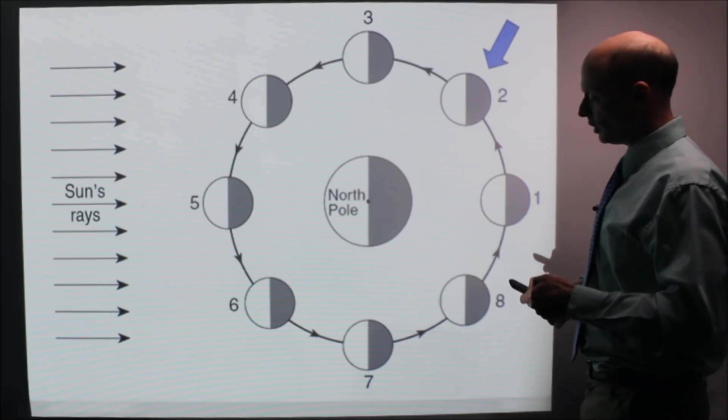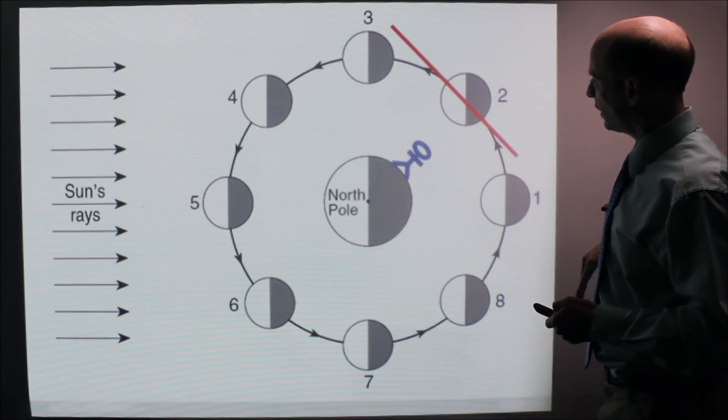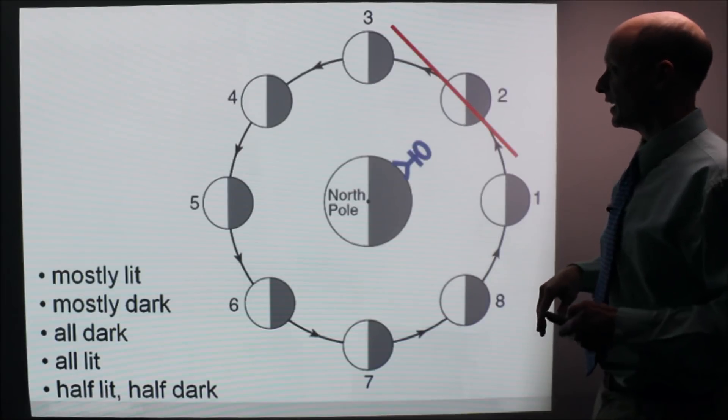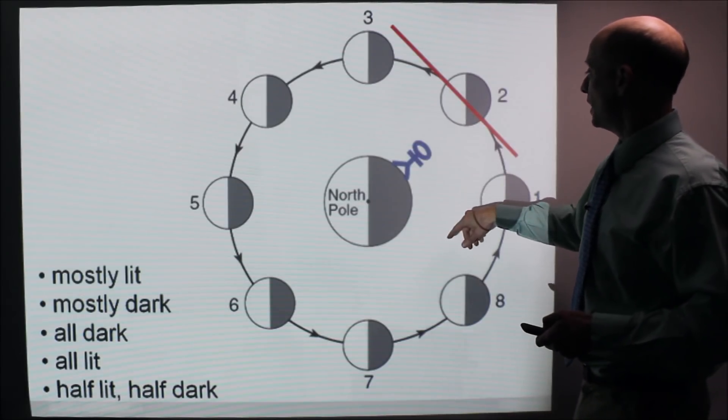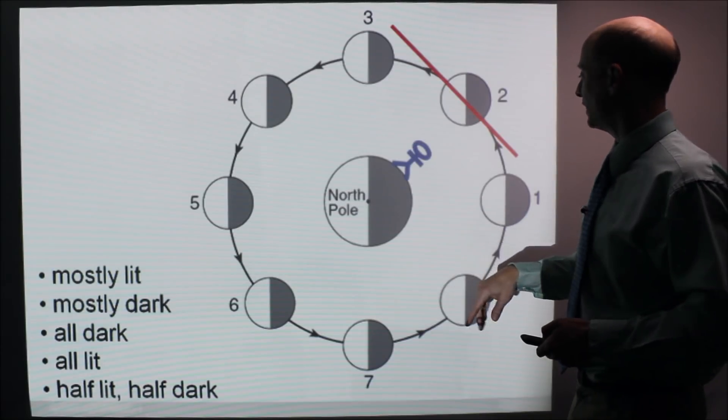Let's say it is at location two. We're going to do the same thing. Draw the person in there. We're going to draw in the line that delineates what they see. They only see this. They don't see that. Then, ask the question, when the person looks up, do they see it mostly lit, mostly dark, all dark, all lit, or half lit and half dark?